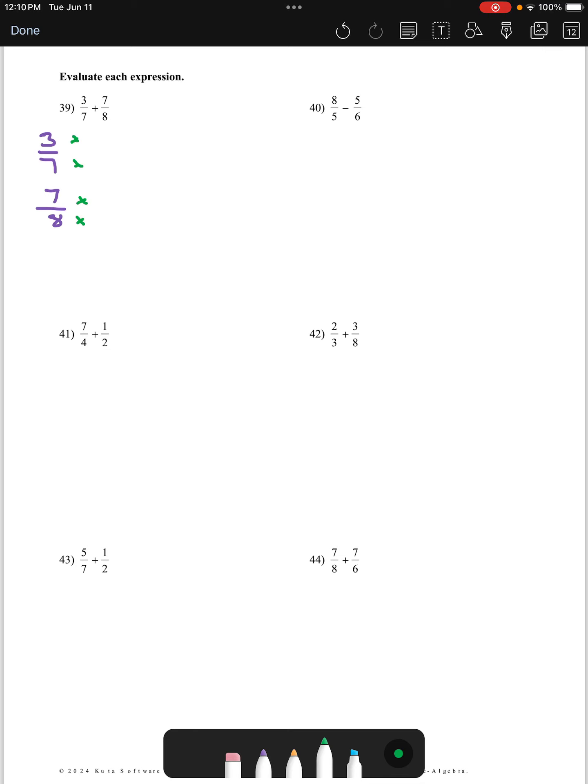So 3/7 and 7/8, denominators are 7 and 8. What's the smallest number that 7 and 8 can agree to become? It's 56. So we do that with the 3/7 by multiplying numerator and denominator by 8. That'll get us 24/56. For our second fraction, we're going to have to multiply numerator and denominator by 7 to get us 49/56.